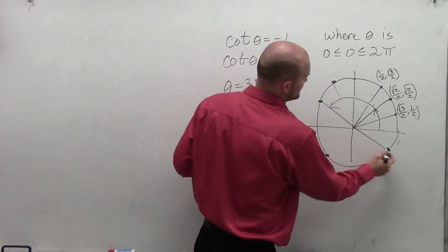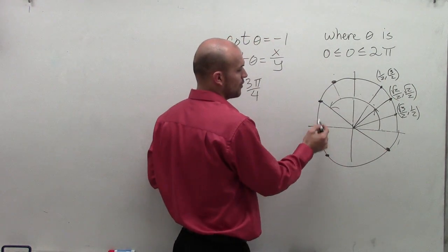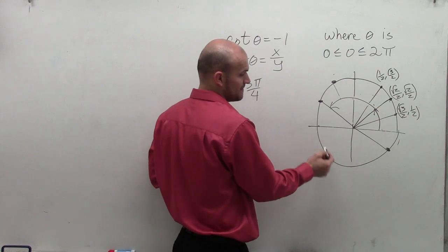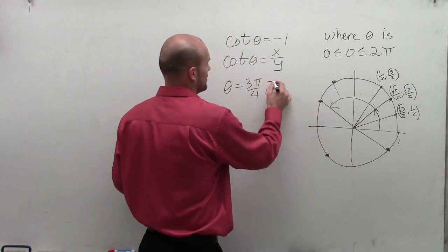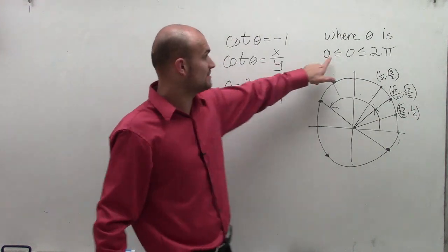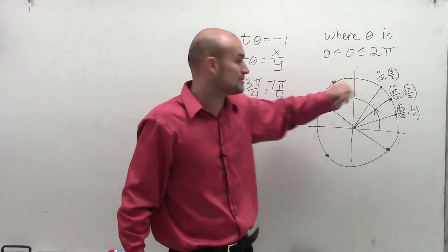And then, again, if we want to continue to this one, we have 3 pi over 4, 4 pi over 4, which is known as pi, 5 pi over 4, 6 pi over 4, and then 7 pi over 4. And then we just want to make sure that our angles are between 0 and 2 pi, as that is our constraint.